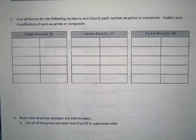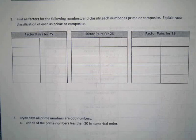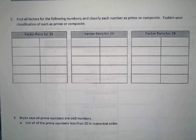Alright, for this one it says: find all factors for the following numbers and classify each number as prime or composite. Explain your classification of each as prime or composite. So this is how they want us to do it.